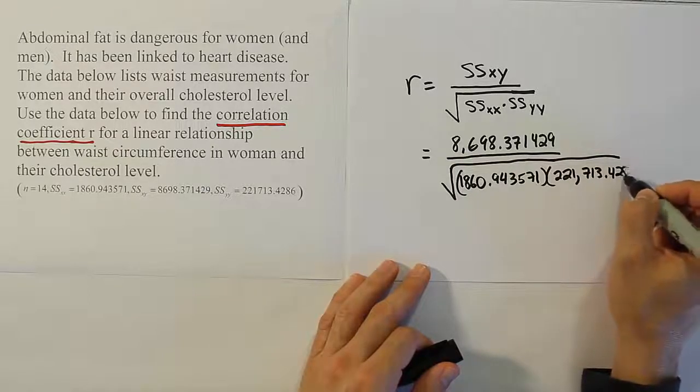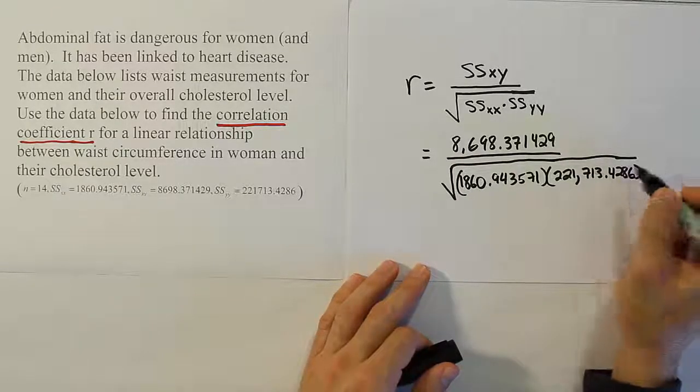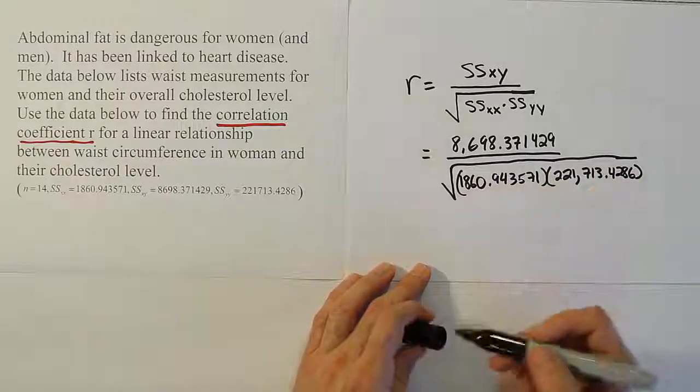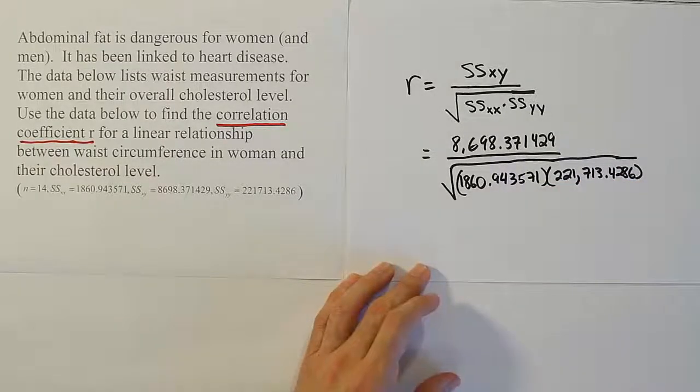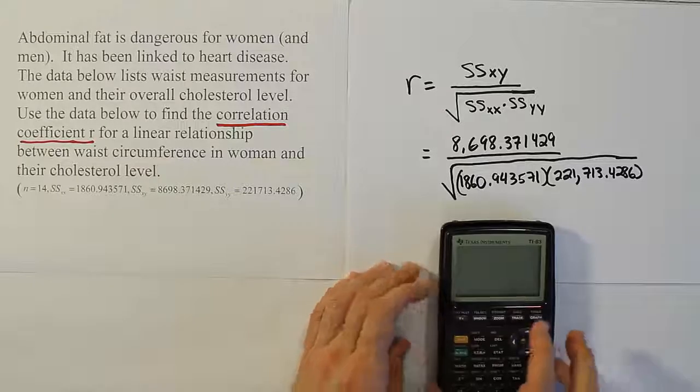So we have 8,698.371429. That's our fraction. Let's go ahead and do the calculation and get the number, and then we'll do a brief interpretation of that number.